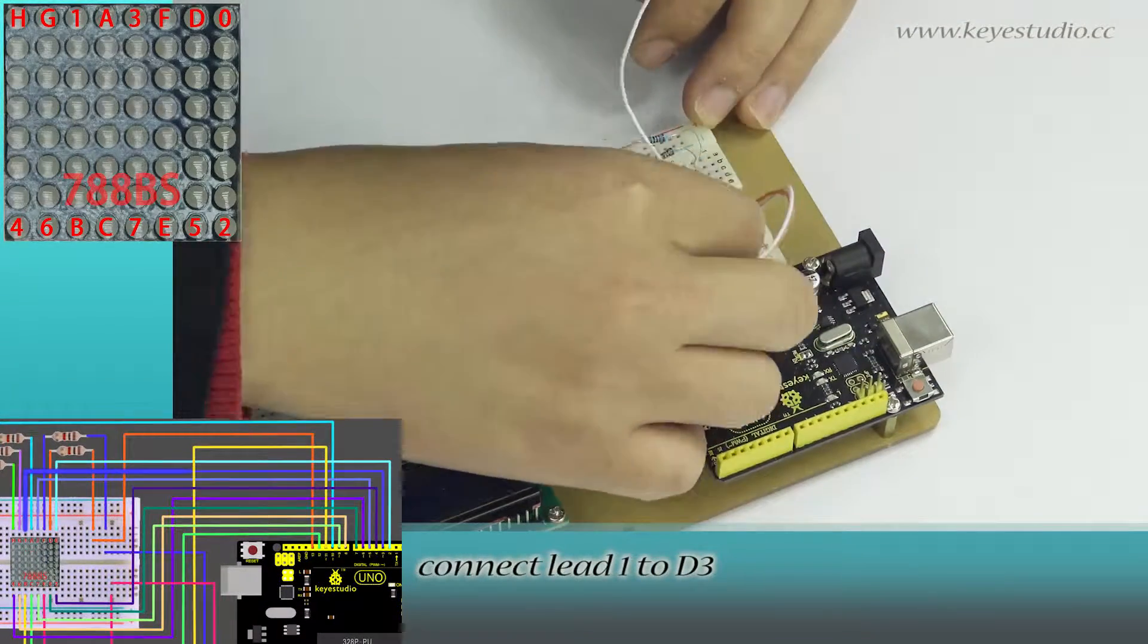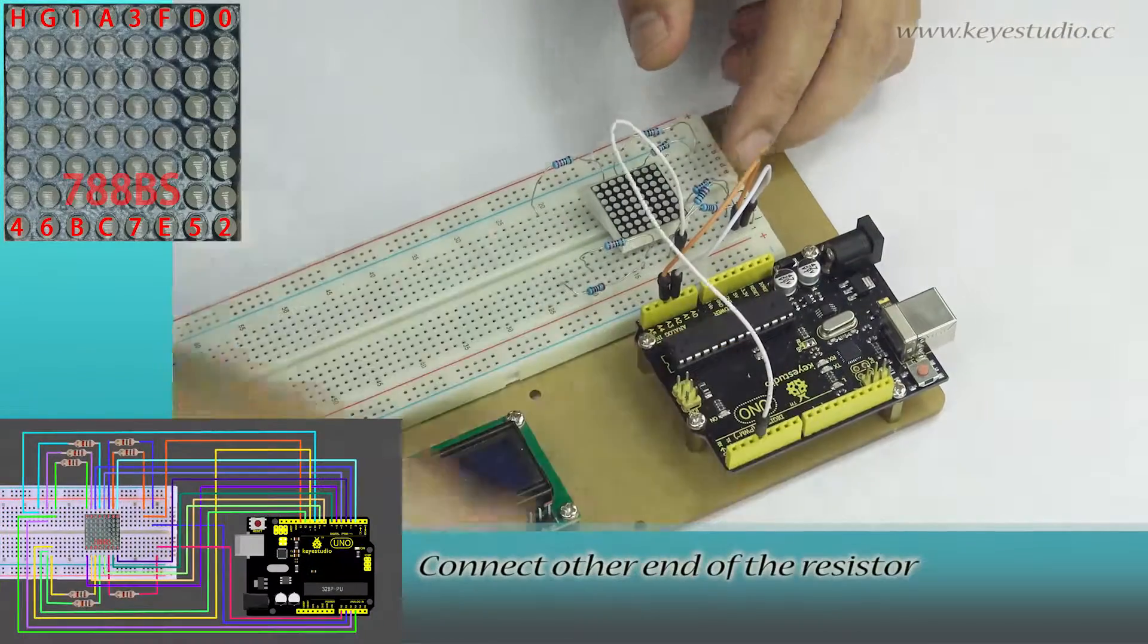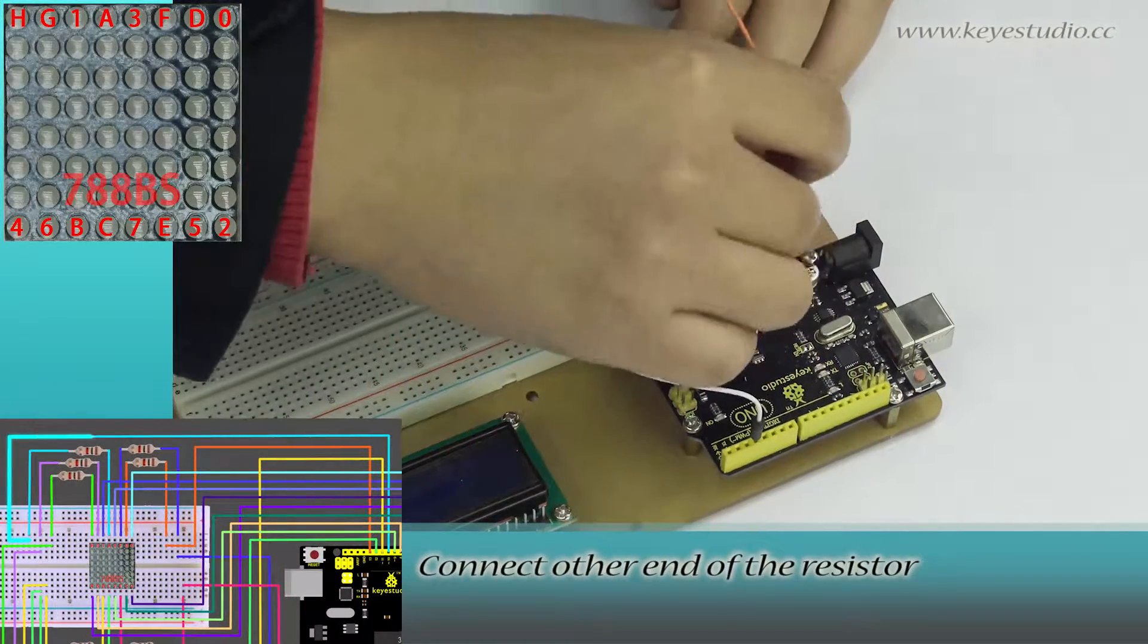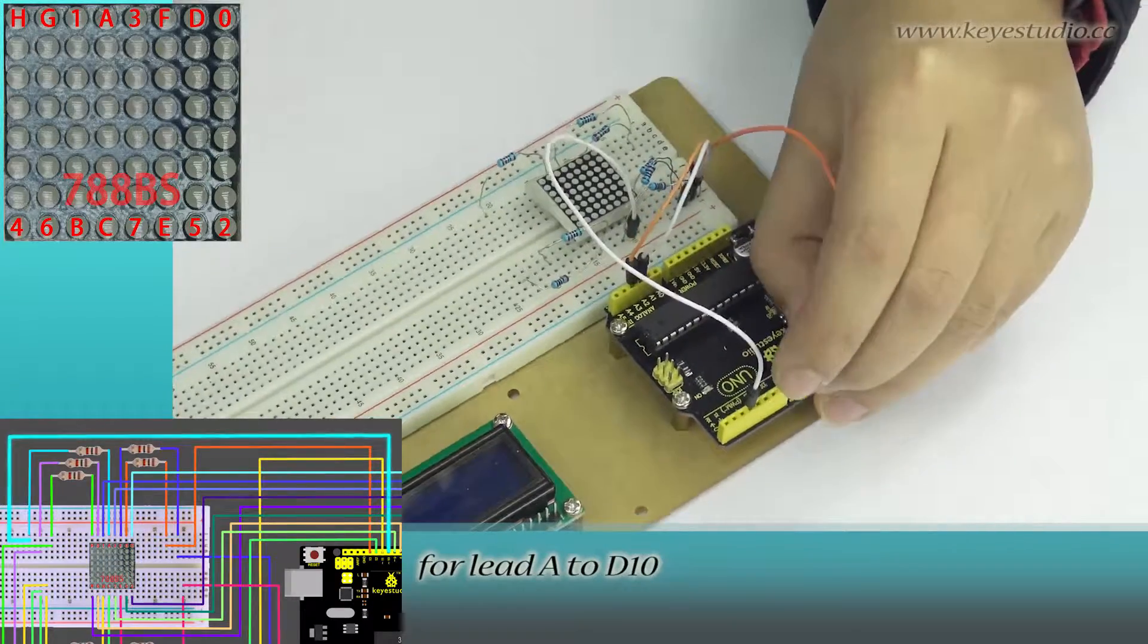Connect the other end of the resistor to lead A to D10. Connect lead 3 to D5.